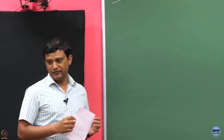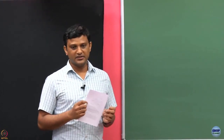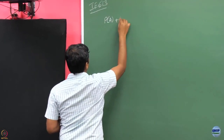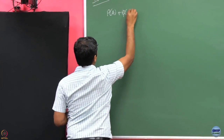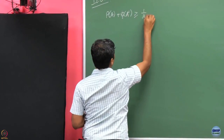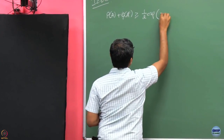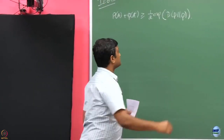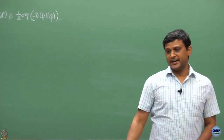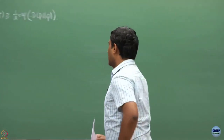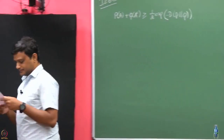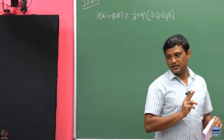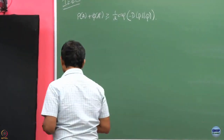Recall that at the end of the last class I stated one result which said that for any measures P and P', the KL divergence satisfies a certain bound. We are going to crucially exploit this result. For the proof I need to set up some notation, so let me define those notations.